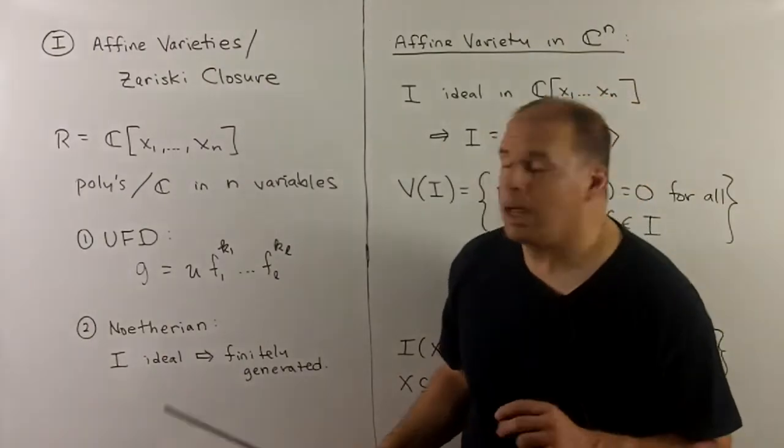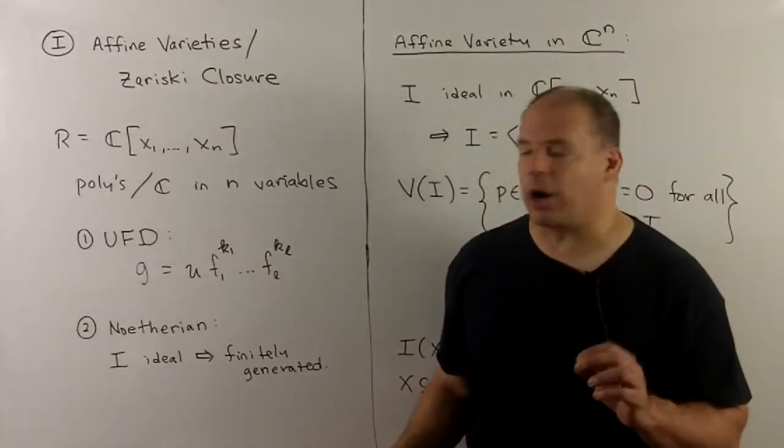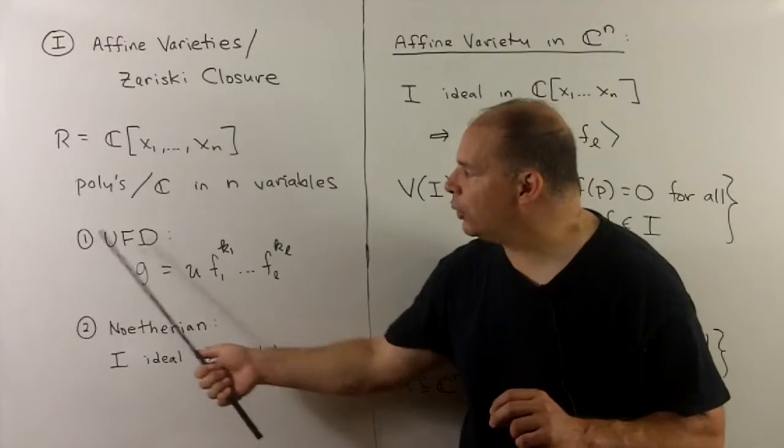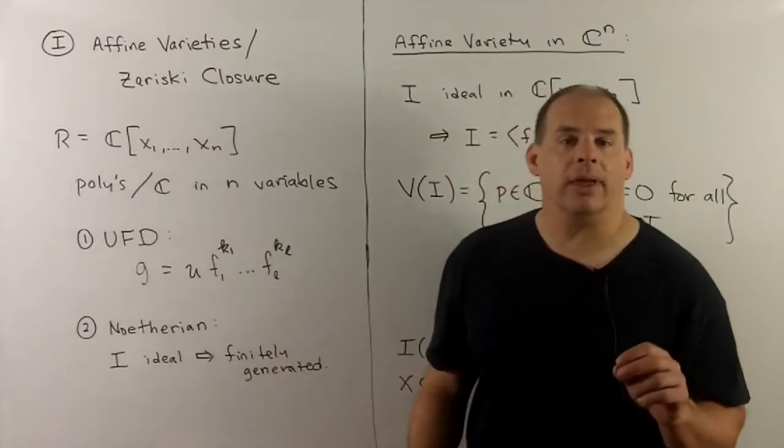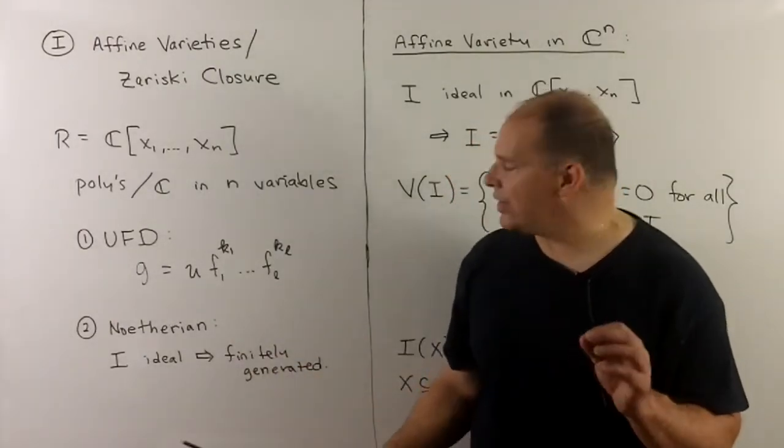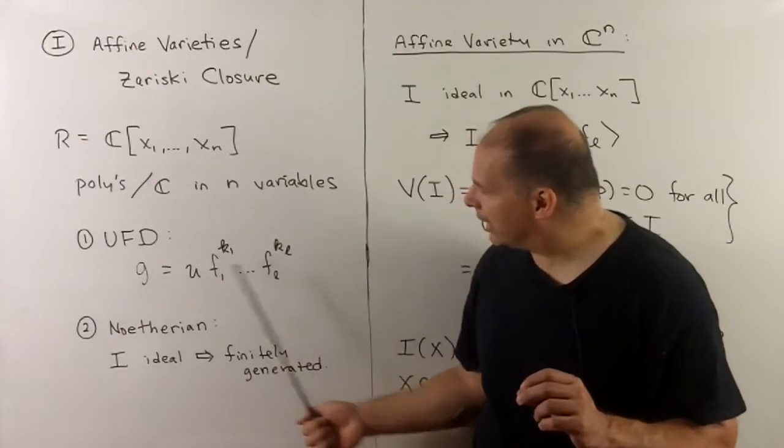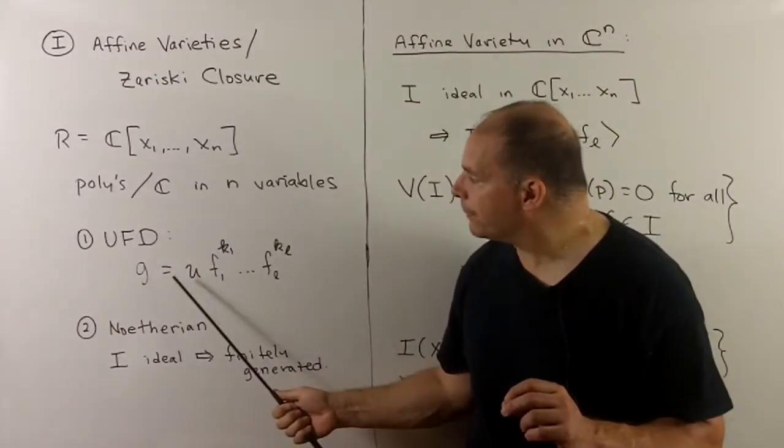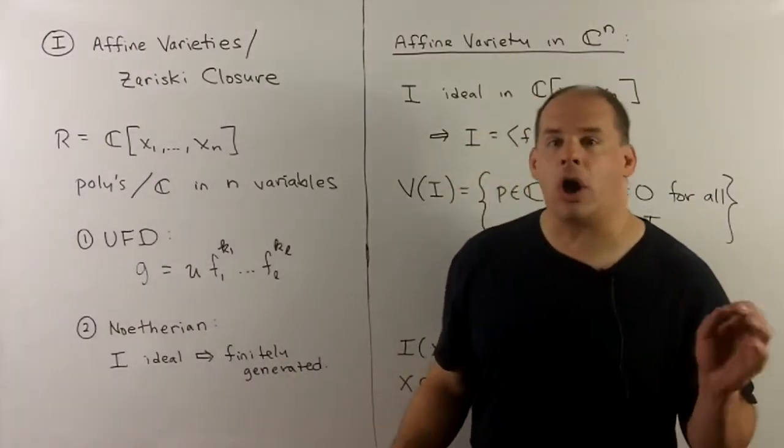This is the ring of polynomials over the complex numbers in n variables. For us, the main ring-theoretic properties of R are, first, R is UFD. So any non-zero element has a unique factorization into irreducibles up to a unit, and we also have that R is Noetherian.